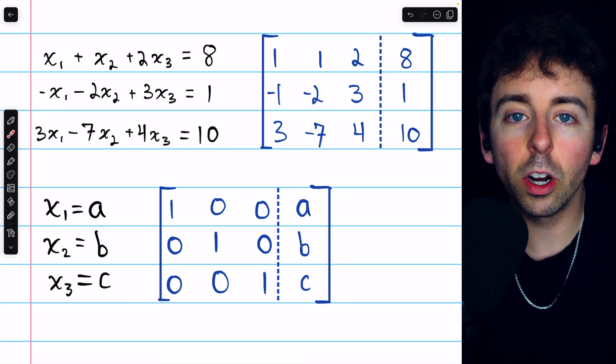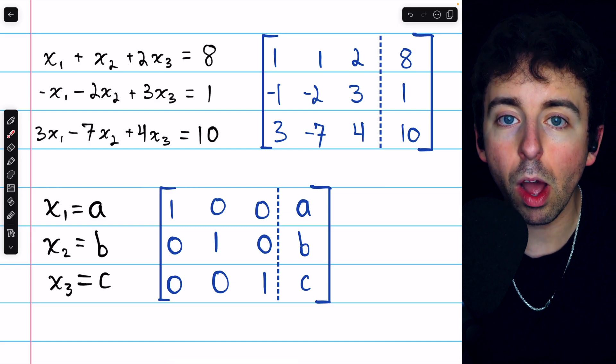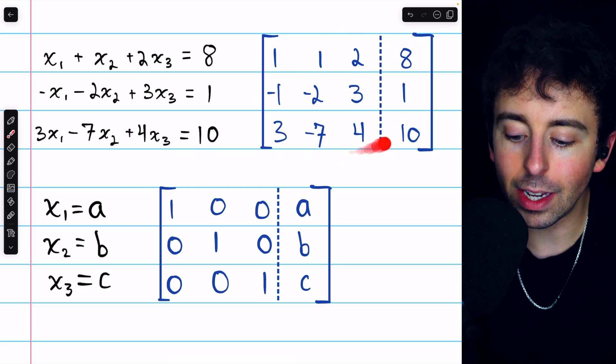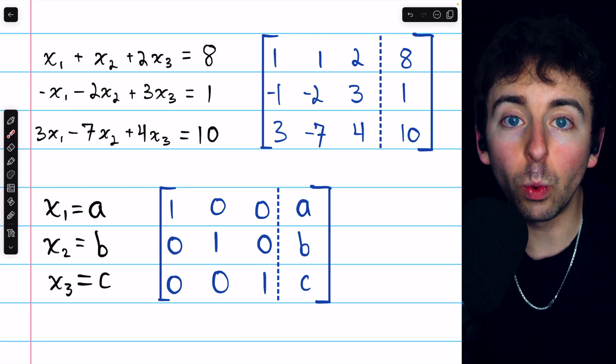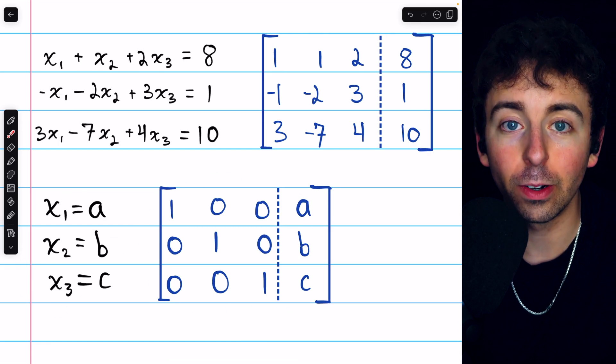So the idea is that we're going to perform what are called elementary row operations on the augmented matrix to get it looking like this, at which point we will have our solution.